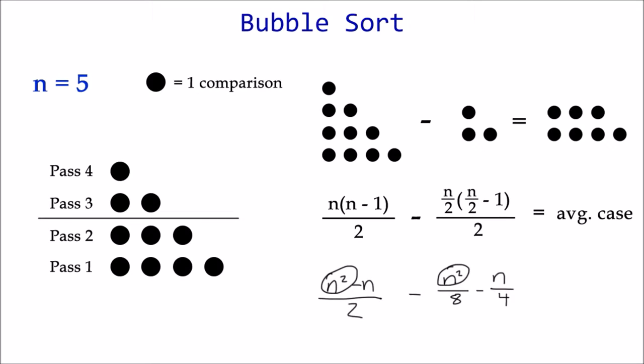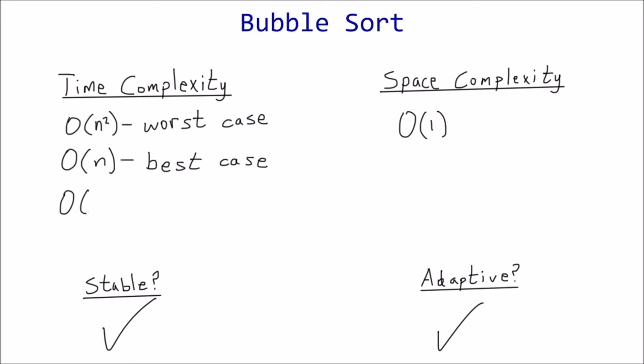The passes that we get rid of contain the least amount of comparisons, so that's why average case is closer to worst case.